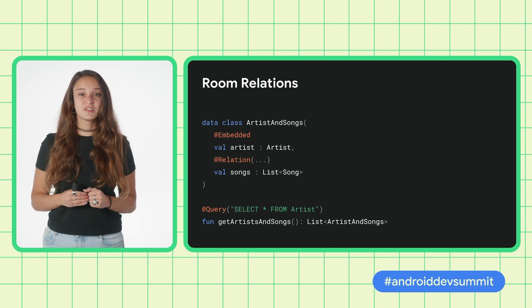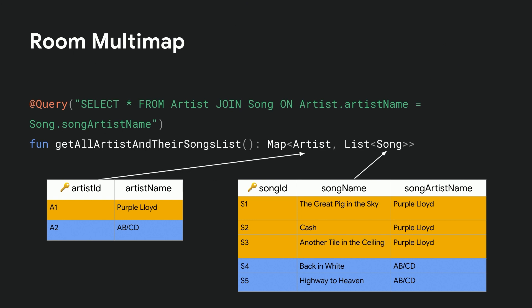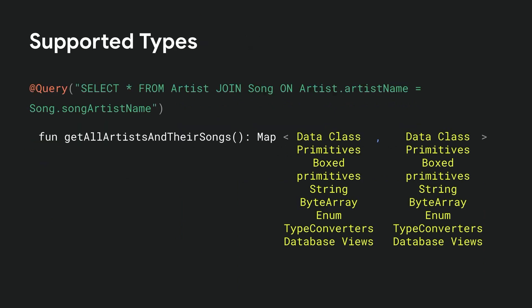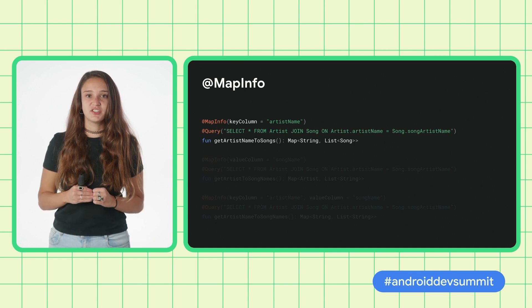To represent the same relationship shown previously between artists and their songs, we can now write a simple DAO method with a return type of a map. You only need to provide the query and the return type — Room will take care of the rest. Under the hood, what Room will do is find artist and song in the cursor and put them in the key and value. In this case, we have a one-to-many mapping, where an individual artist is mapped to a collection of their songs. You can also have a one-to-one mapping like so.